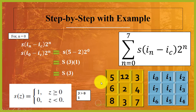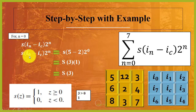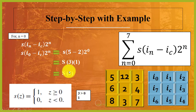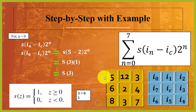For n=0: i_0 is 5, center pixel i_c is 2, and 2 raised to power 0 is 1. We compute g = (5 - 2) × 1 = 3. Since 3 is greater than 0, we assign 1.